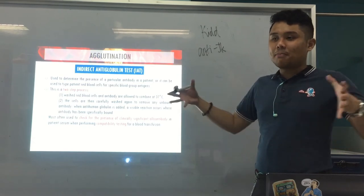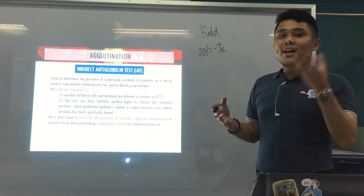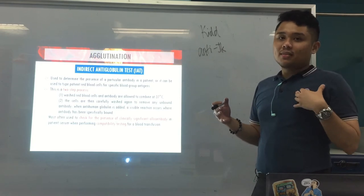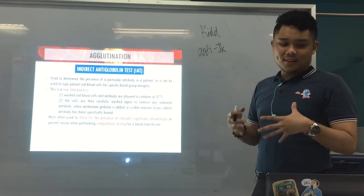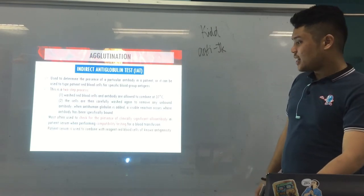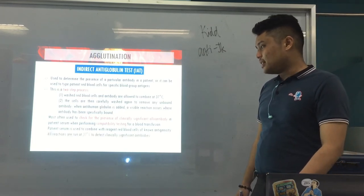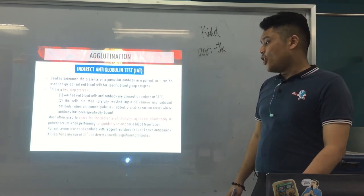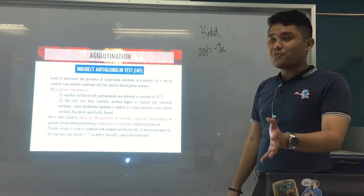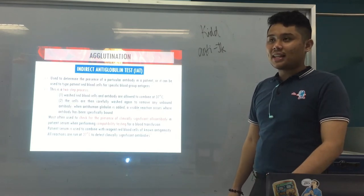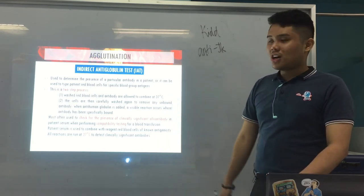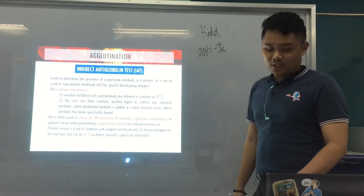The main point of IAT is in vitro sensitization — you make them react outside the body. Unlike the direct test where the reaction already occurred inside the patient's body. All reactions are run at 37°C because most clinically significant antibodies are of IgG in nature.